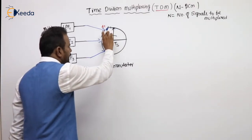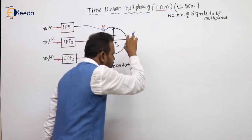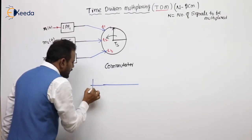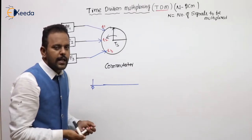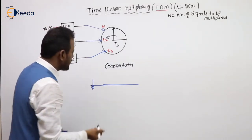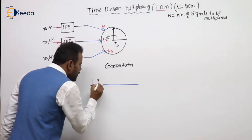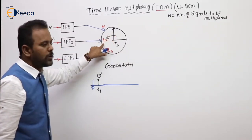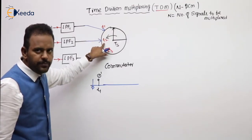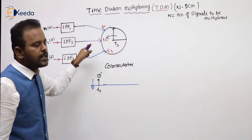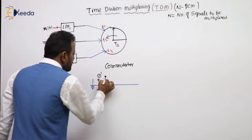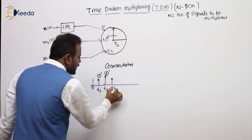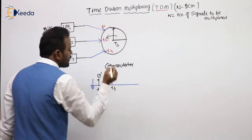When time becomes T1, there is a closed path for the first message. The meaning is that the value of M1(t) at t equal to T1 is going to be passed — first message, first sample. When the time becomes T2, the switch is connected here, meaning the value of M2 at that instant is passed — the second message's sample. When time becomes T3, there is a closed path for the third message — third message, first sample.